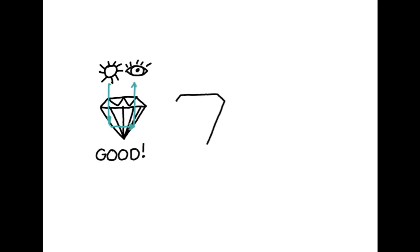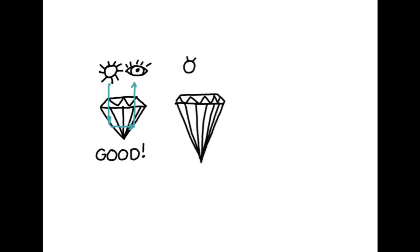A well-cut stone will allow the light to pass into the gemstone, off of the surfaces and back through the top of the stone — this will create a bright stone. A deeply cut stone often times will project the light through the stone, and not all of the light will return to your eye. This can make the stone too dark.